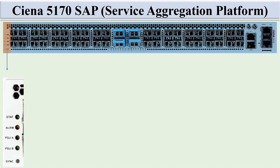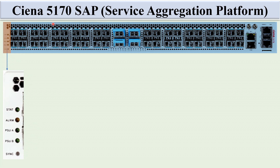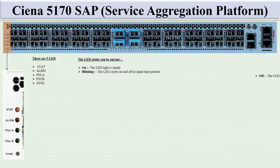Now let's look at the LED status meanings. In the front view of the Ciena 5170, there are five LEDs: State, Alarm, PSU A, PSU B, and Sync. Each LED has a combination of three states: on, blinking, and off. 'On' means the LED light is steady, 'off' means the LED is off, and 'blinking' means the LED cycles on and off in equal time periods.